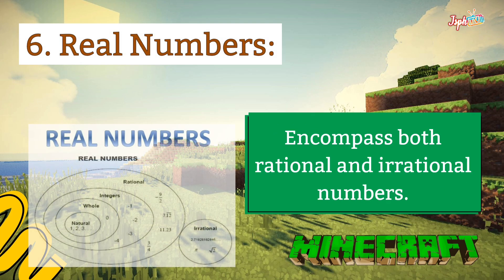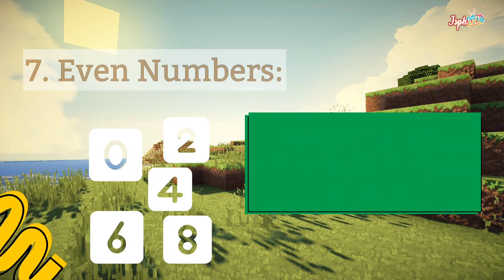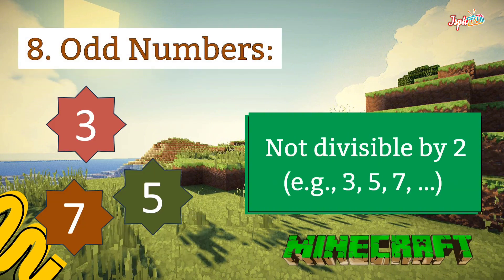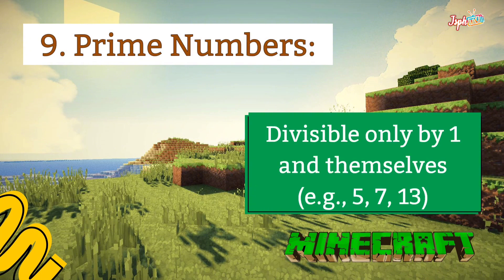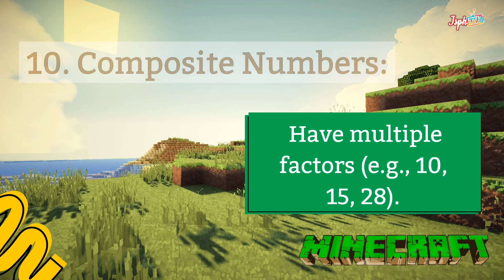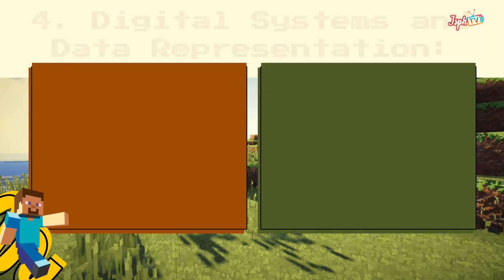Real numbers encompass both rational and irrational numbers. Even numbers are divisible by 2, like 2, 4, 6, 8, 10. We also have odd numbers, not divisible by 2, like 3, 5, and 7. Prime numbers are divisible only by 1 and themselves, like 5, 7, and 13. And composite numbers have multiple factors, like 10, 15, 28, etc.